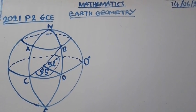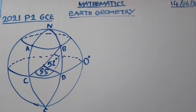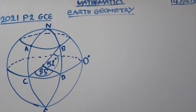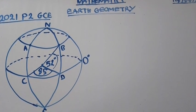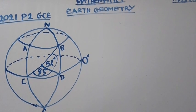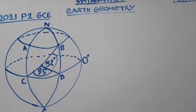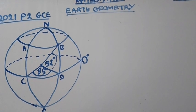2021 Paper 2 GCE. The question on Earth Geometry. The question goes as follows: The points A, B, C and D are on the surface of the Earth as shown in the following diagram.